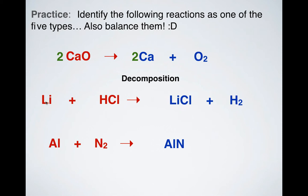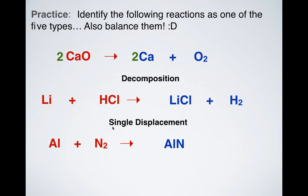What about this? I've got lithium and hydrochloric acid, making lithium chloride and hydrogen gas. Single displacement. How would I balance that? If I put a 2 in front of HCl, that balances out the hydrogens. But now I need to put a 2 in front of LiCl to balance out the chlorides. And then I have to put a 2 in front of Li to balance out the lithiums.